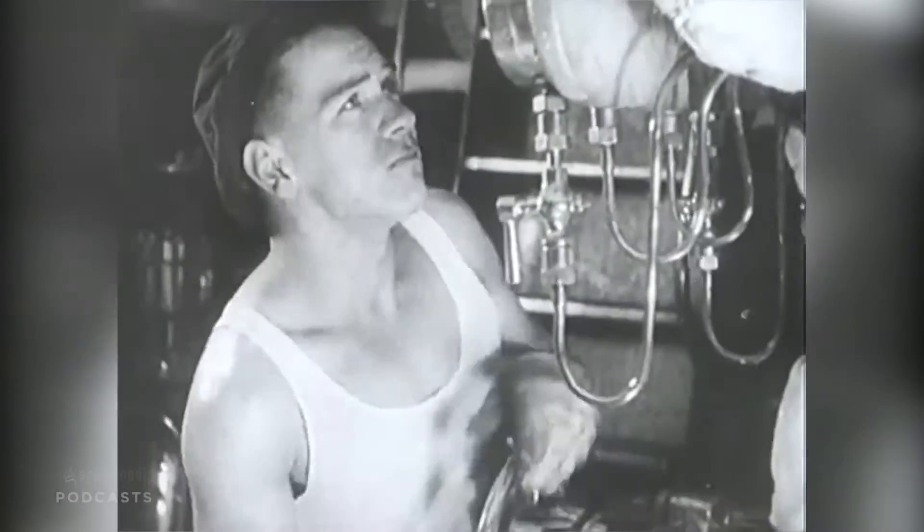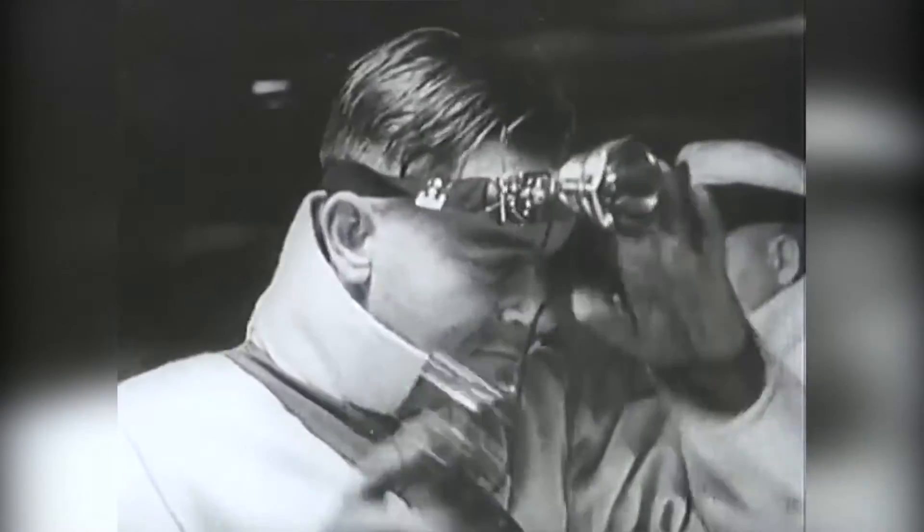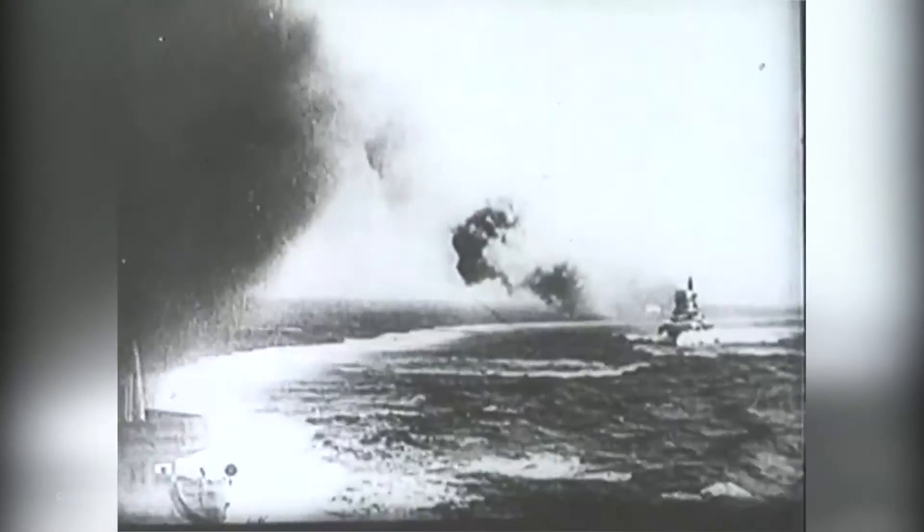During World War II, Mount Stromlo built optical munitions. So anything requiring a piece of glass for the Anzac force, gun sites, periscope sites, navigating sites was actually built at Mount Stromlo because we learned how to make mirrors.